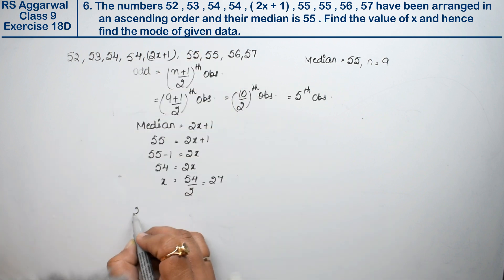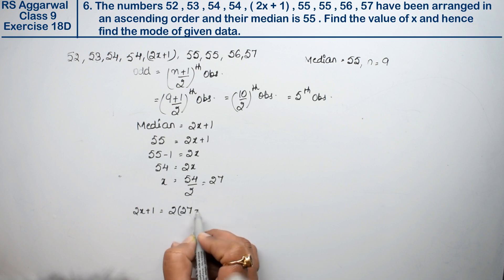Let's verify: 2x plus 1 equals 2 into 27 plus 1, which equals 54 plus 1, which equals 55. Correct.